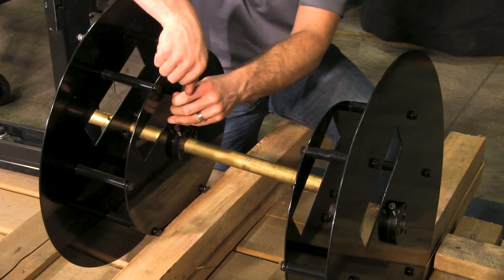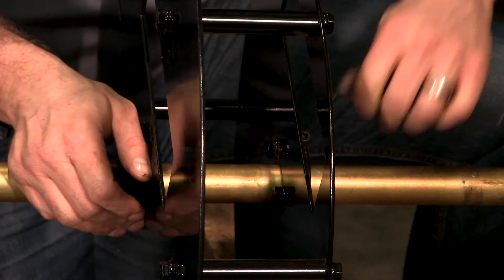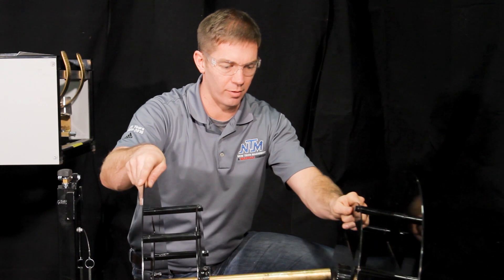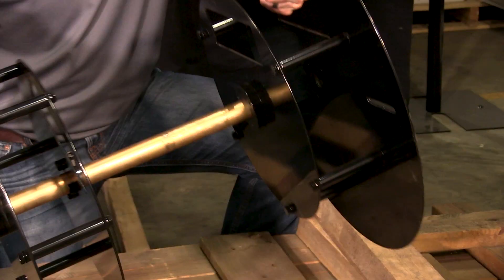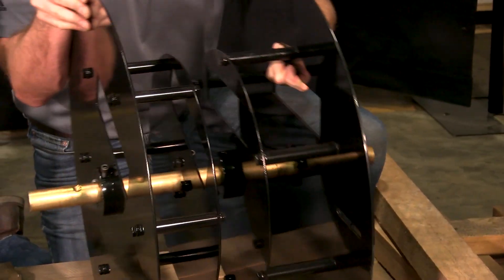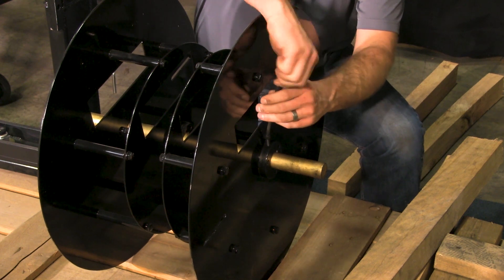Next you want to tighten the inside socket head cap screw. Next you slide the removable side of the reel onto the shaft and then you lock down the outside socket head cap screw.